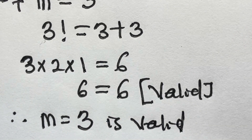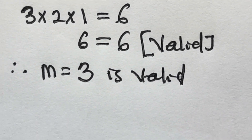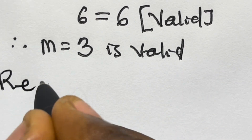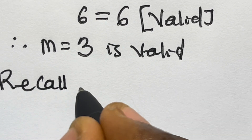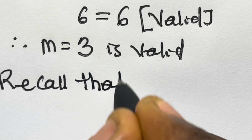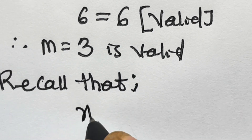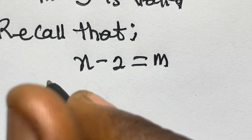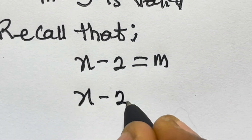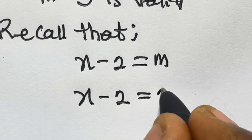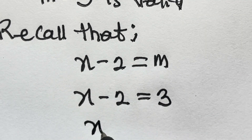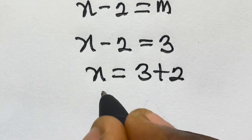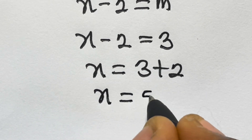We are finding x, not m. Recall that x minus 2 equals m, and m equals 3, so x minus 2 equals 3, giving us x equals 3 plus 2, therefore x equals 5.